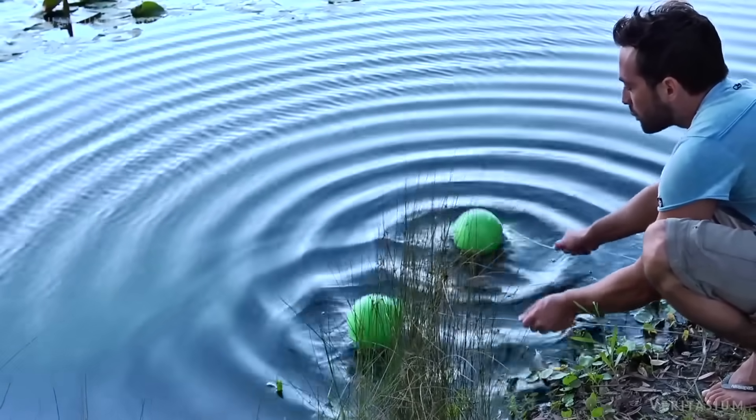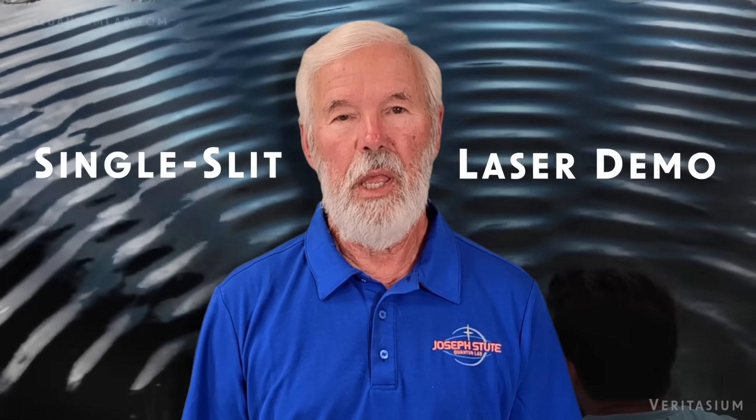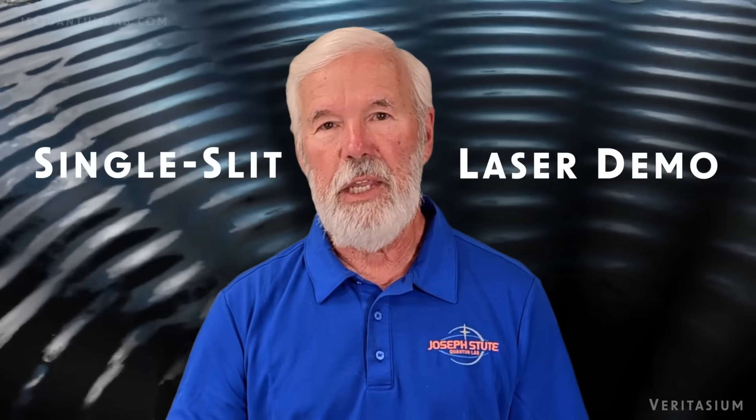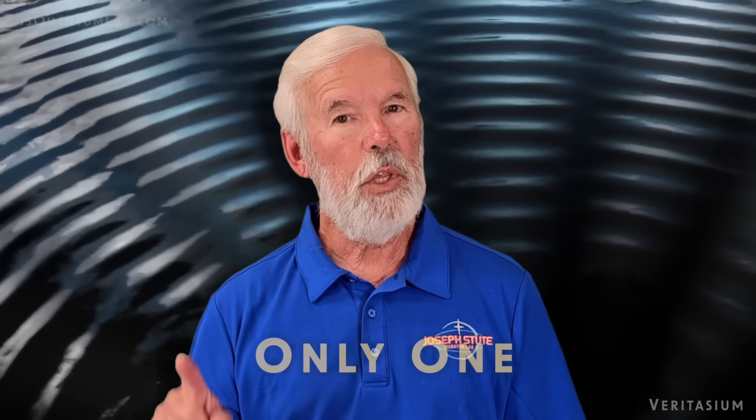But if I add a second source of ripples, then we start getting an interesting pattern. I see why the video is so popular. They do an excellent job of explaining why you need two slits to create an interference pattern. I will present a single slit laser experiment that shows you do not need two slits. Only one.